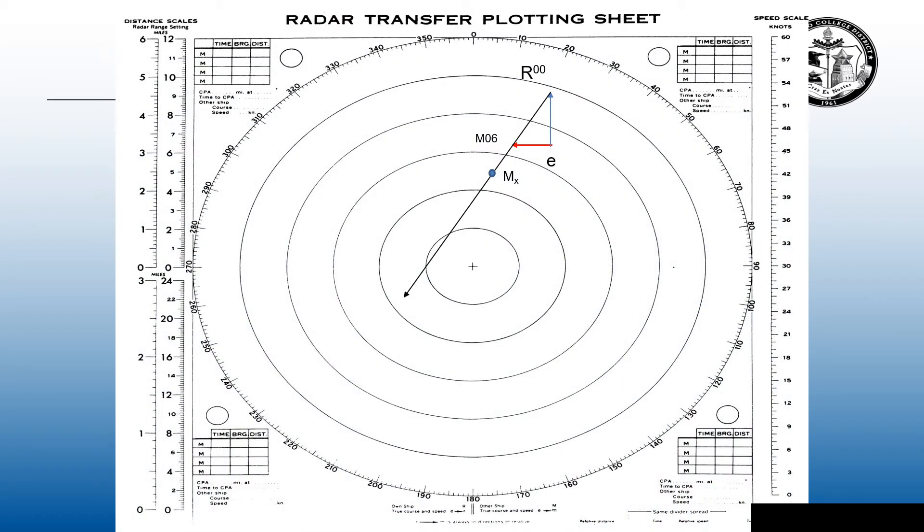This is our basic triangle. E to R is our own ship's true course and speed heading due north at 20 knots. The contact is heading westbound and the relative motion line is breaching our CPA by approximately 1.8 miles.